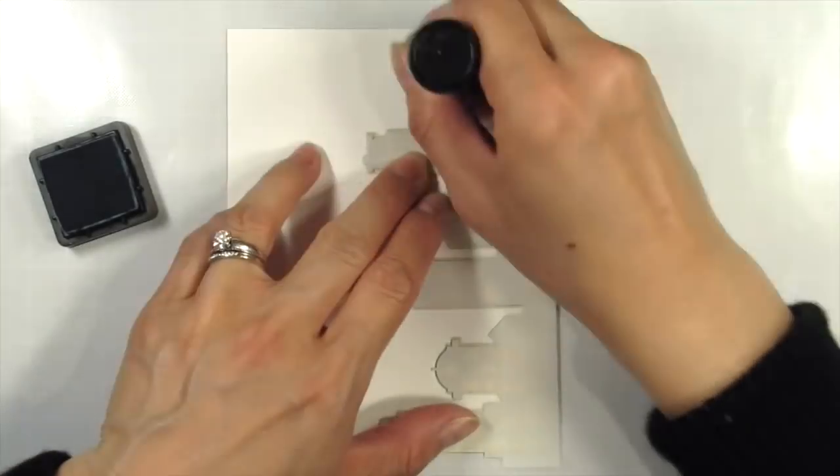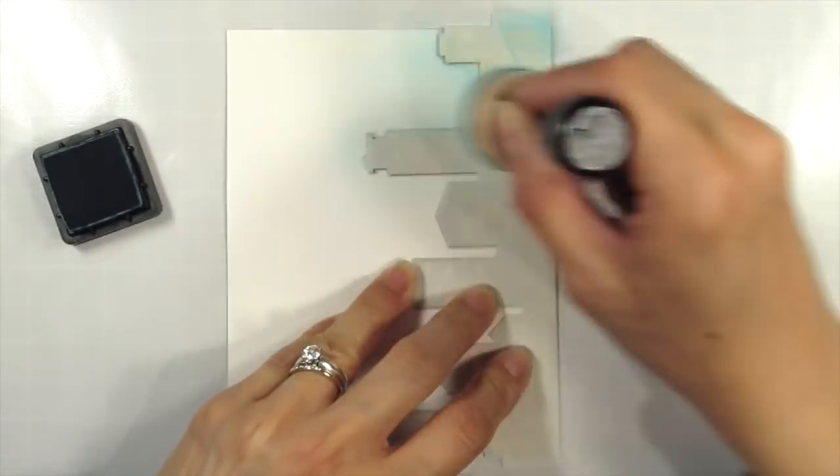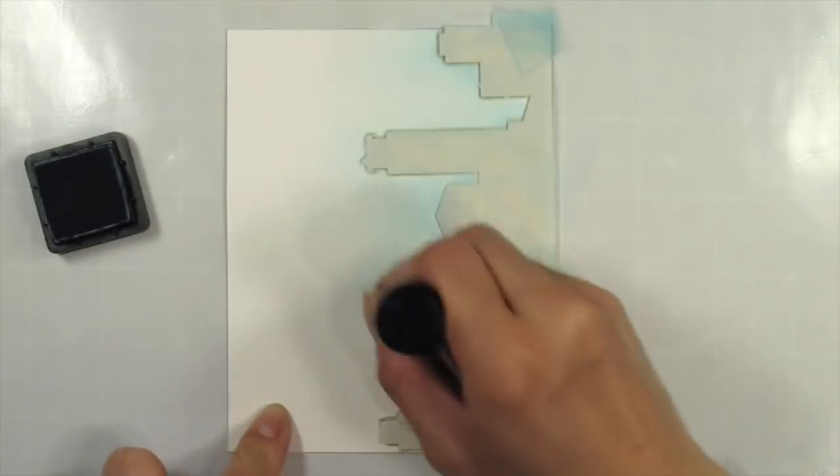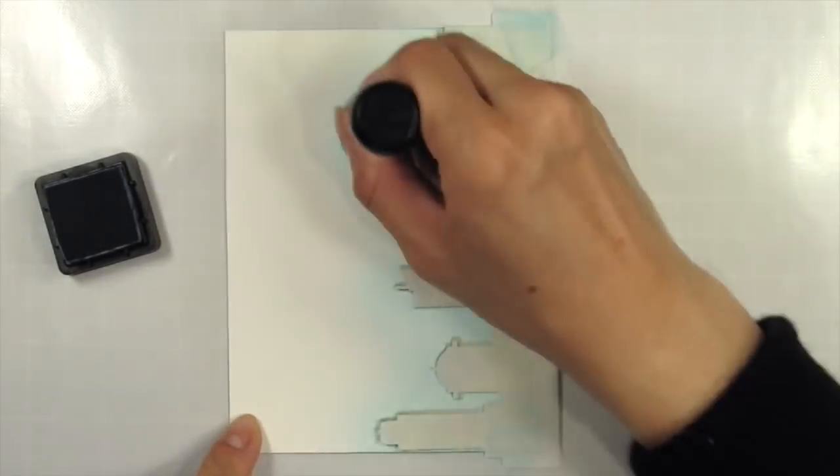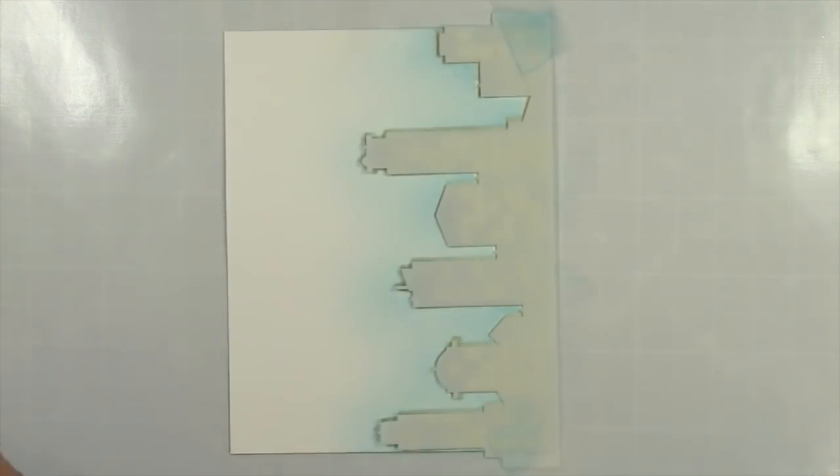Now it's time to flip the panel since I'll be sponging upward from the solid piece that was cut off. I'm using this piece as a mask to protect the buildings I just created with ink blending. I'm going to use blues now to create a sky behind the buildings. After the sky is done I use shimmer mist to create splatter. This adds some texture and shimmer.